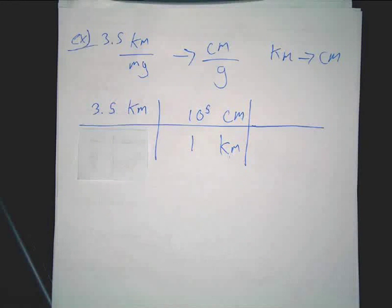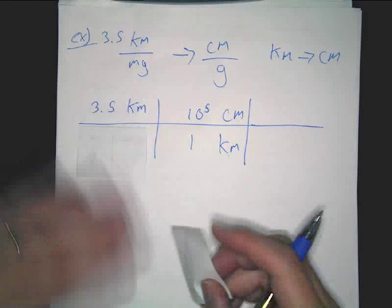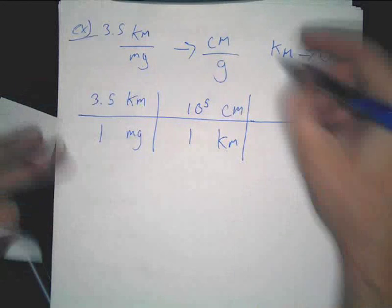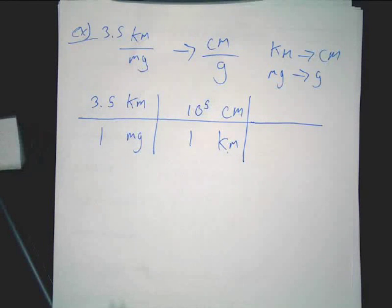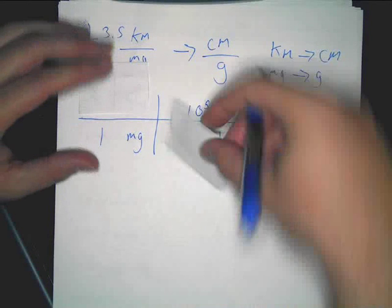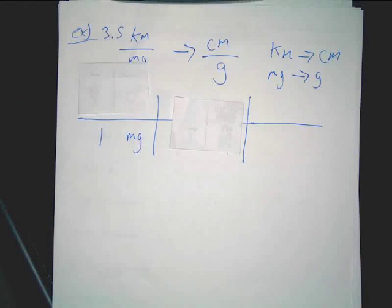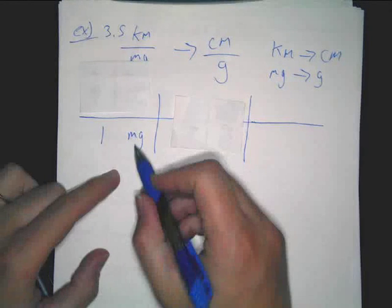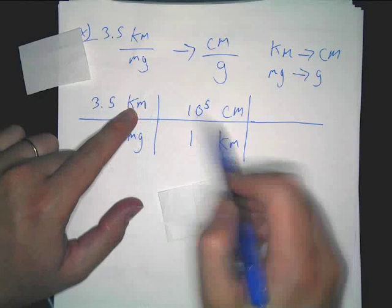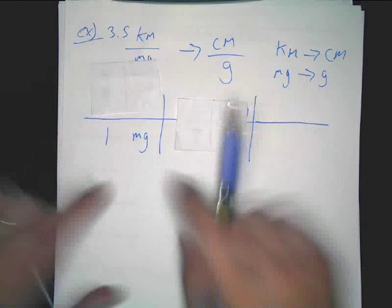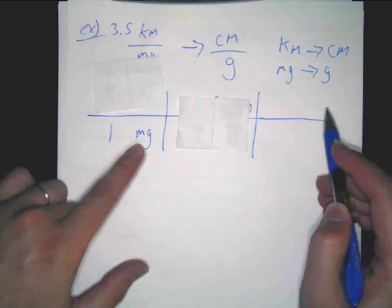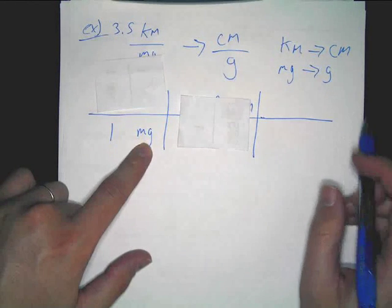So now we've done this conversion, but we still have to do our conversion of milligrams to grams. Here's what I suggest you do: you then ignore everything else. Now maybe you can make a speculation as to how we're going to do this. So far we've converted diagonally down, we've canceled out that way. This time though, maybe you can guess, we're going to cancel upwards instead.